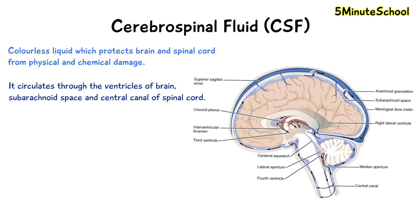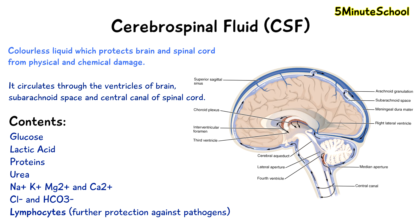Cerebrospinal fluid is actually part of extracellular fluid and it contains various substances which are both organic and inorganic. It contains glucose, lactic acid, proteins, urea, and positively charged ions like sodium, potassium, magnesium, and calcium. It also contains negatively charged ions like chloride and bicarbonate.